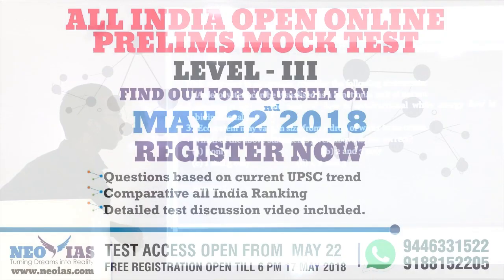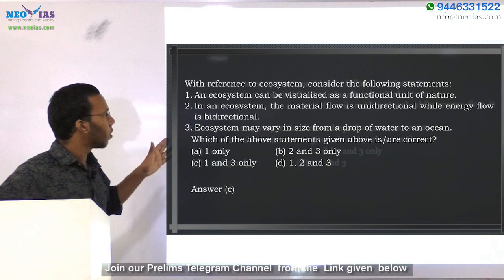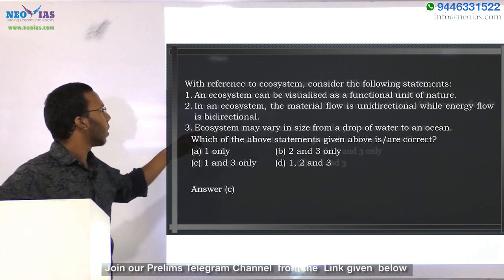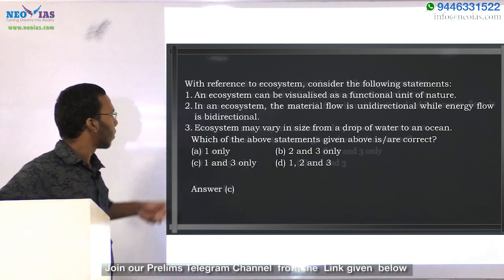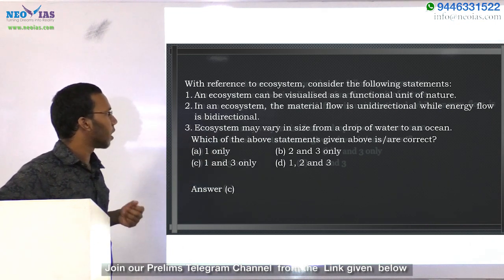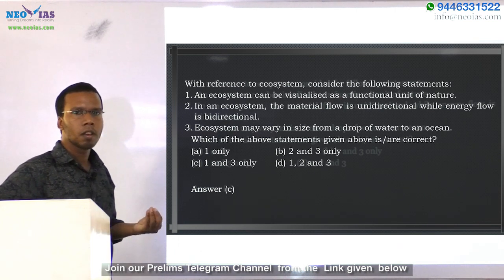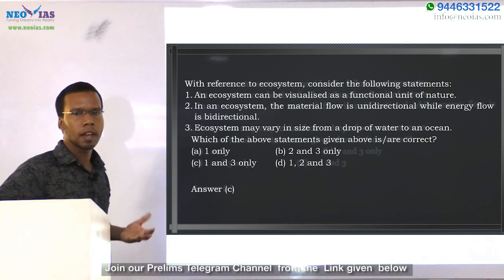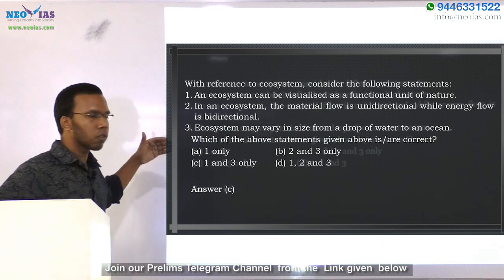The second statement — in an ecosystem the material flow is unidirectional while energy flow is bidirectional — is a wrong statement, because in an ecosystem the material flow is bidirectional and energy flow is unidirectional. That is why the second statement is wrong; we eliminate option B and D. The third statement — ecosystem may vary in size from a droplet of water to an ocean — is a correct statement, because a droplet of water has microbes interacting with their environment, and an ocean has so many organisms all interacting for their energy needs. Third statement is also correct.